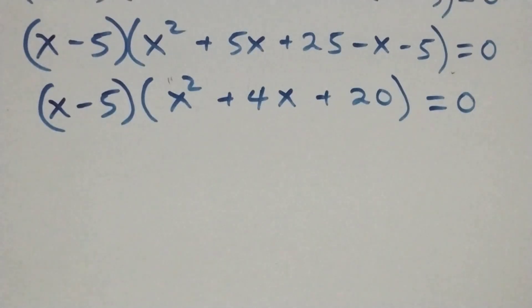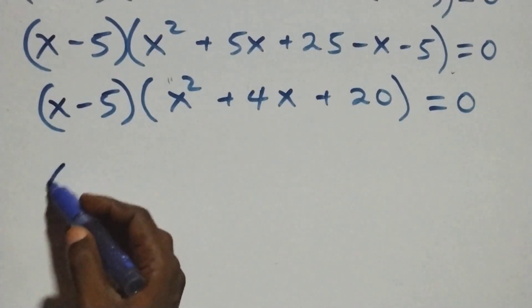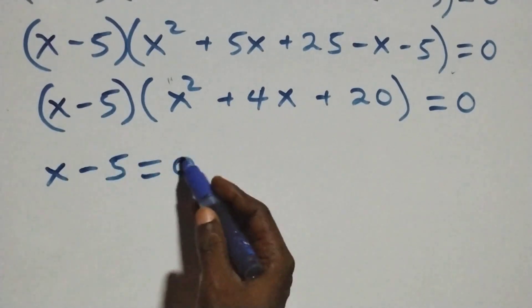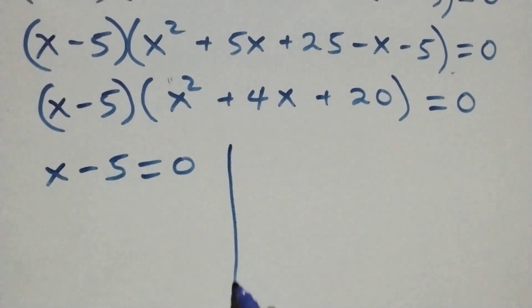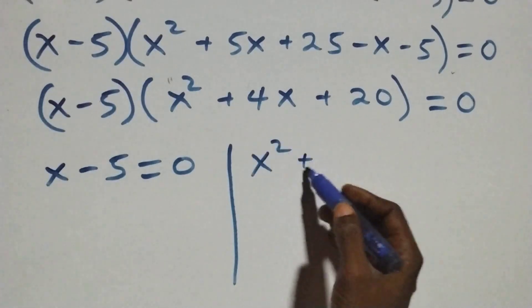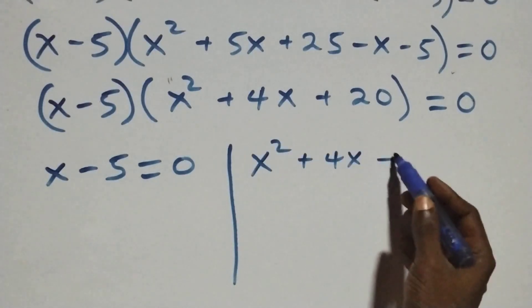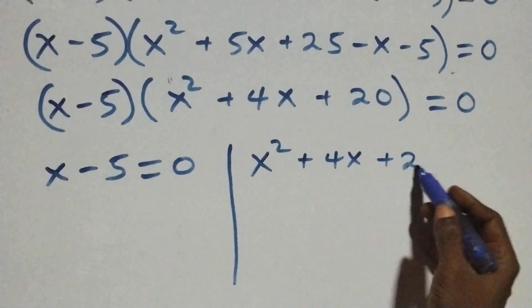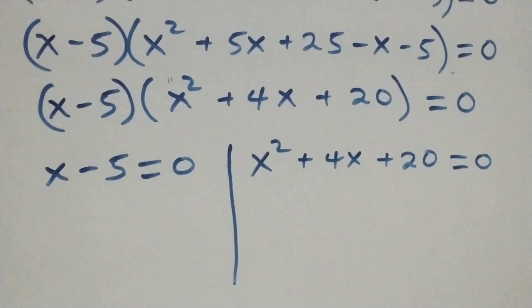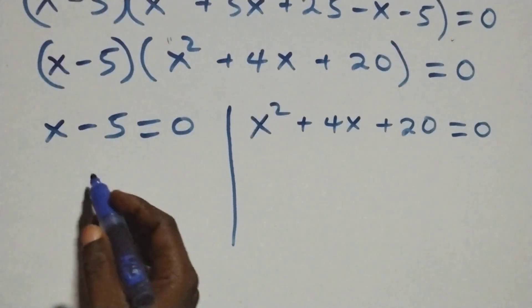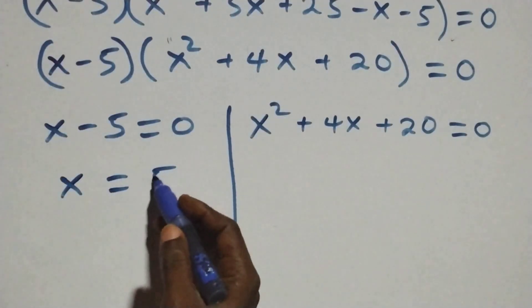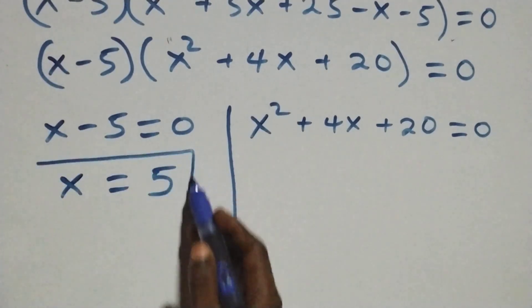We have two possible cases. The first: x minus 5 equals zero, or x squared plus 4x plus 20 equals zero. From the first case, x equals 5, which is a real solution.